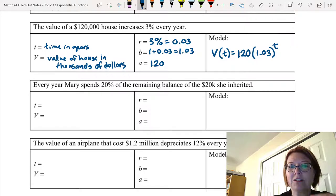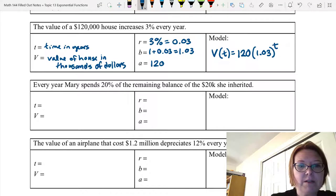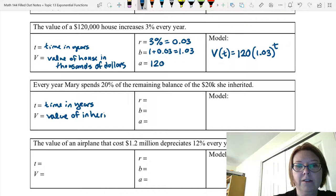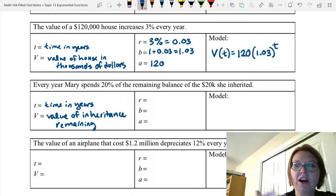Third problem. Every year Mary spends 20% of the remaining balance of the 20K she inherited. So time is in years. Let's define that. T is time in years. V is the value of the inheritance remaining. And this time I'm going to not put it in thousands just so you can see that it works both ways. So in this case, I'm going to let A be 20,000 because I didn't say it was in thousands, right? And again, you can do it each way. You just have to define it. It's totally fine.